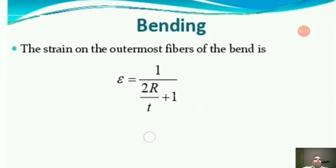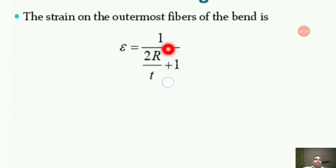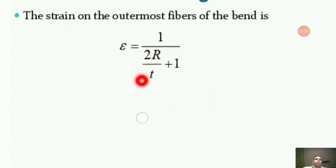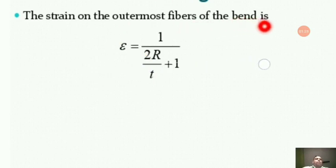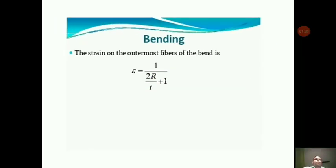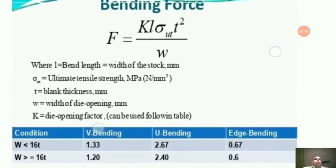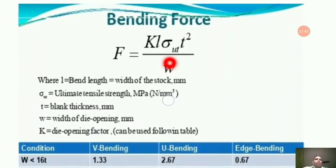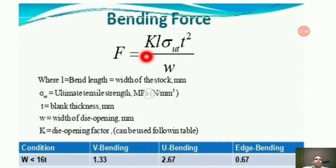This formula is very important for GATE purposes. The strain on the outermost fibers of the bend is given by ε = 1 / (2R/T + 1), where R is the bend radius and T is the thickness of the material.